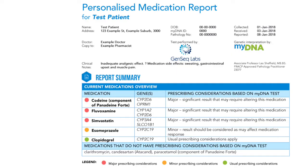The first page provides a summary of the results and includes any medications you may have entered in at the time you registered your kit. Any medications you entered that are covered by the test will appear with a coloured dot beside their name and a summary of the genetic test results.